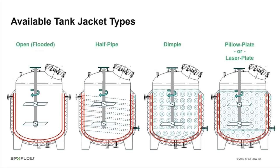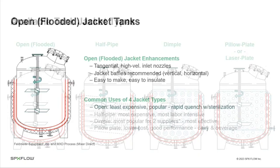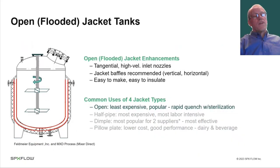In terms of jacketed tanks, there are four common types: the open or flooded jacket, the half pipe, the dimple jacket, and pillow plates or laser plates. In each depiction, insulation surrounds the outside of the tank to keep heat from escaping to the environment and instead transferring it into the process fluid. Let's start with the open or flooded jacket tank.